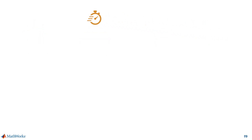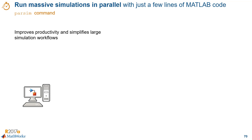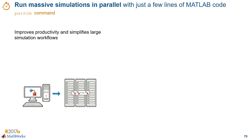One easy way to speed up your simulations is to run them in parallel with the parsim command. Running simulations in parallel is one of those really simple techniques that gives you huge gains in productivity. Our goal with making this simple is that you can focus on solving the design problem rather than setting up the parallel simulations. It's just as easy to use multiple cores on your machine as it is to scale up to use hundreds and thousands of workers in clusters.